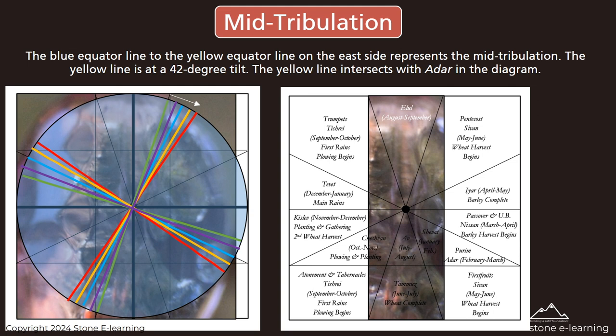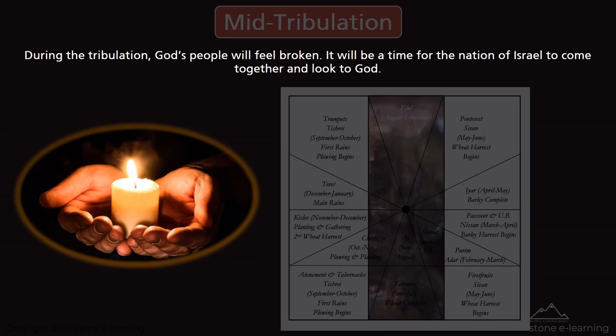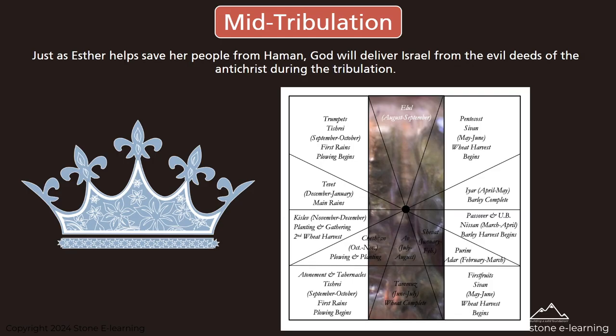The blue equator line to the yellow equator line on the east side represents the mid-tribulation. The yellow line is at a 42-degree tilt and intersects with Adar in the diagram. During the tribulation, God's people will feel broken — it will be a time for the nation of Israel to come together and look to God. Just as Esther helped save her people from Haman, God will deliver Israel from the evil deeds of the Antichrist during the tribulation.